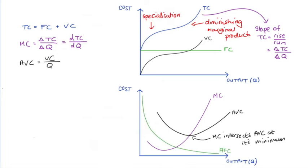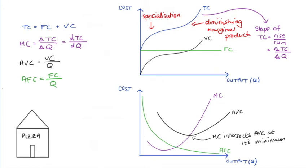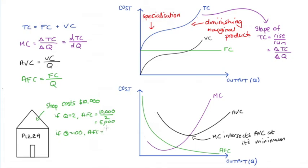Average fixed cost is really interesting. We find it by dividing fixed costs by the quantity produced. Since fixed costs are constant, when quantity is low, average fixed cost is very high. For instance, if my shop costs $10,000 and I've only made two meals, average fixed cost is 10,000 divided by 2, which is $5,000. When output is 100, average fixed cost is 10,000 divided by 100, which equals $100. When output is 200, it comes out to $50.